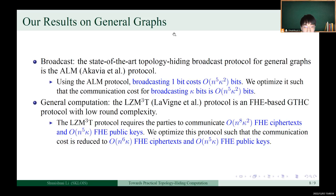Then we consider the LZM3T protocol, which is an FHE-based general THC protocol with low round complexity. This protocol requires the parties to communicate O(n⁸·κ²) FHE ciphertexts and O(n⁵·κ) FHE public keys. We optimize this protocol such that the communication cost is reduced to O(n⁶·κ²) FHE ciphertexts and O(n⁵·κ) FHE public keys.